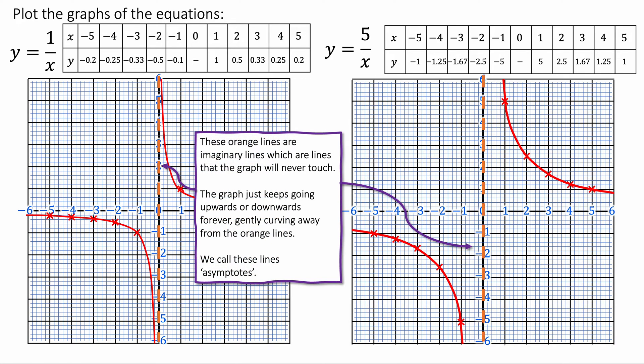And these orange lines here, these orange dotted lines, are imaginary lines that the graph never touches. These are called asymptotes. The graph just constantly curves away from these lines and never touches them.